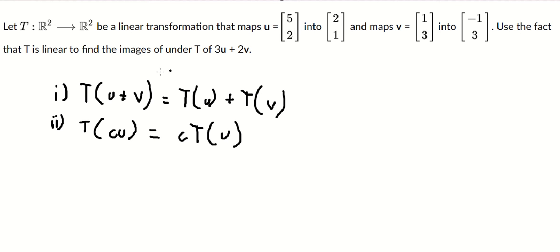Now we can apply this formula here, so it should be like this. This one is about this one, and this one is about this one. So if we apply this formula, we have capital T of 3u plus capital T of 2v.